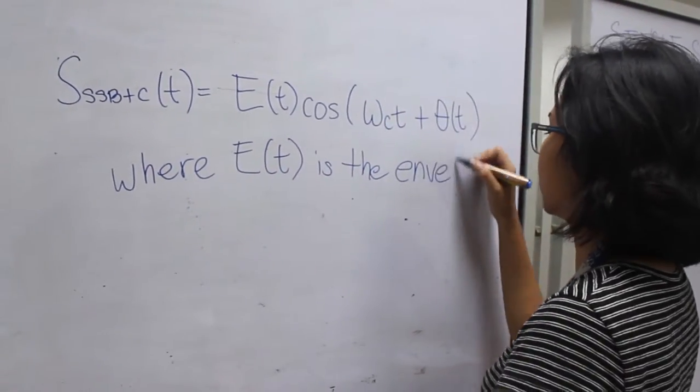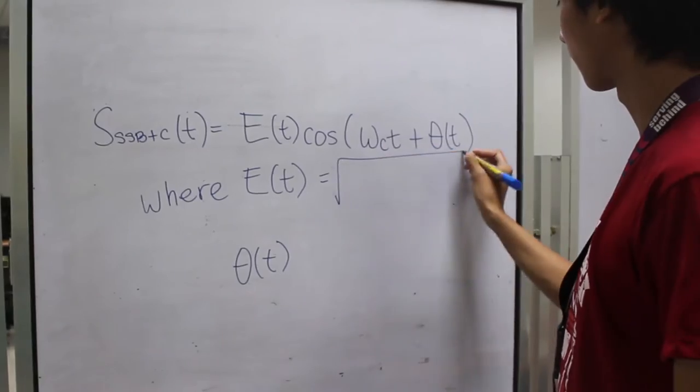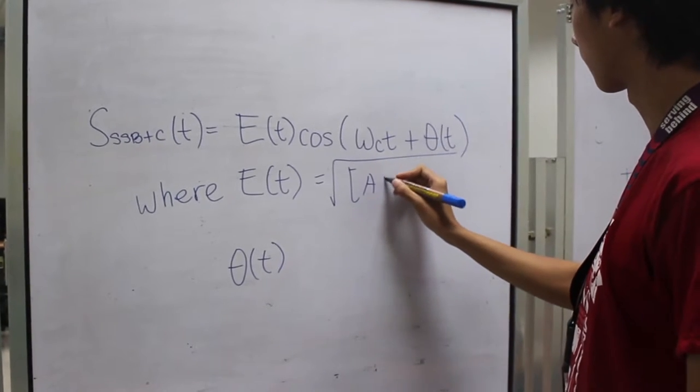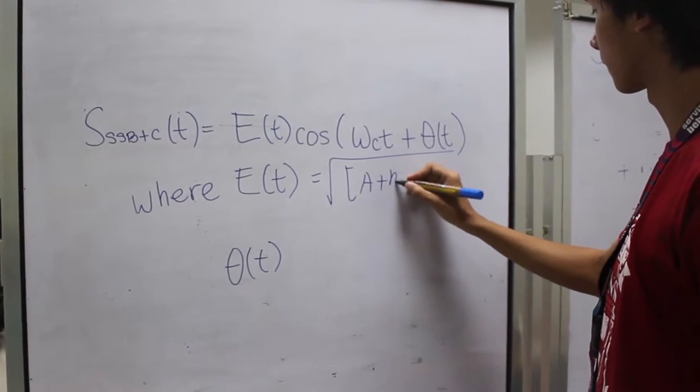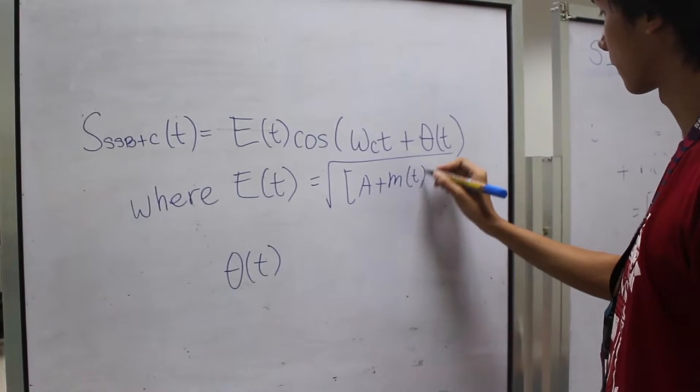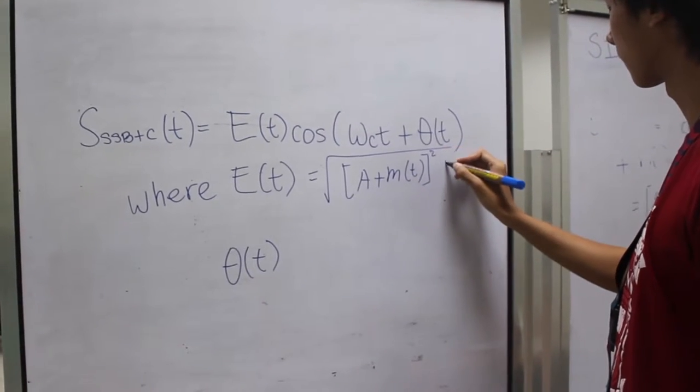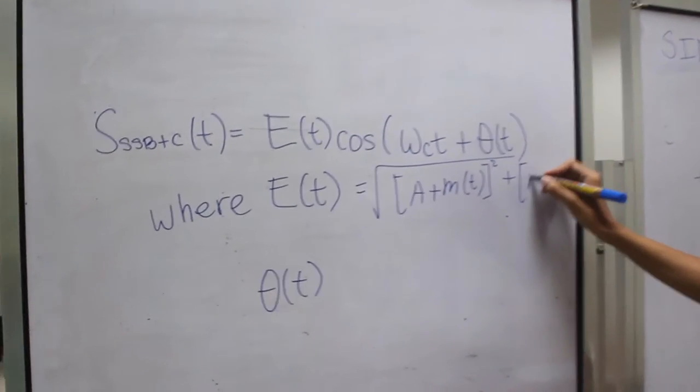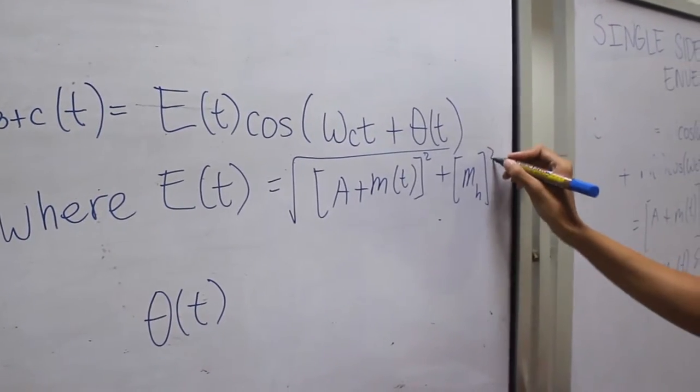Where e(t) is the envelope. E(t) is given by the square root of the sum of the squares of the amplitudes of the carrier and the modulating signal, and the amplitude of the Hilbert Transform of the modulating signal.